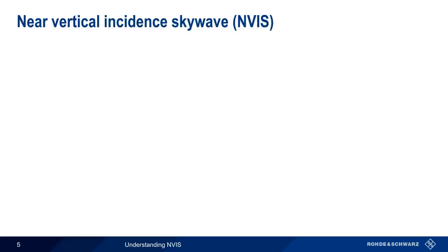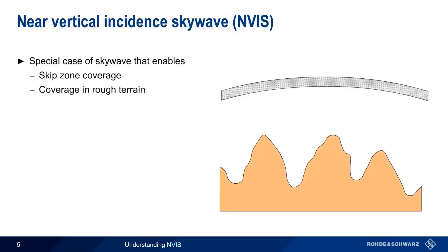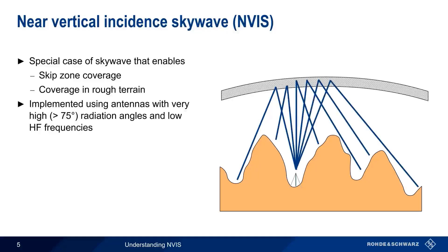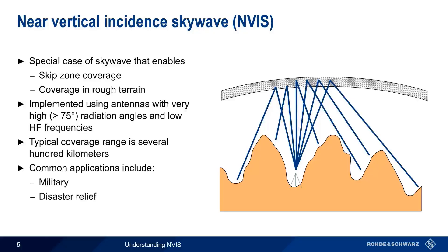NVIS, or Near Vertical Incident Skywave, is a special case of sky wave propagation that enables both skip zone coverage as well as coverage in rough terrain, where ground wave or low angle sky wave signals might be blocked. NVIS is implemented using an antenna with a very high radiation angle, typically 75 degrees or more, transmitting on lower HF frequencies. The nearly vertical takeoff angle of these signals means that they're returned to Earth relatively close to the transmitter. Typically, coverage is on the order of several hundred kilometers. This range, combined with the easy setup of most NVIS antennas, makes this technology very well suited for applications that require ad hoc communications in possibly challenging terrain, such as military operations or disaster relief operations, where the existing communications infrastructure may have been damaged or destroyed.